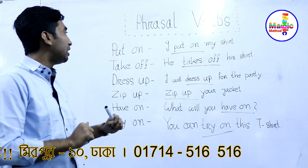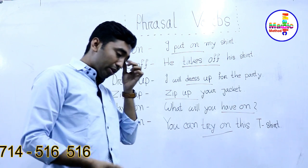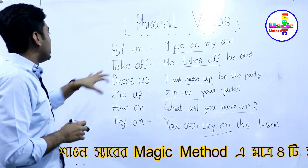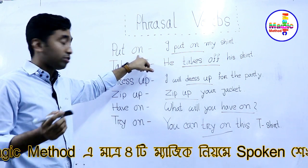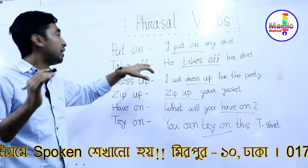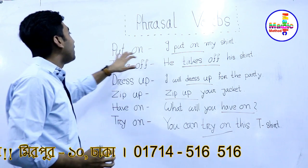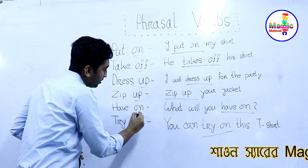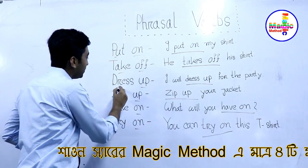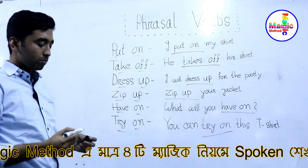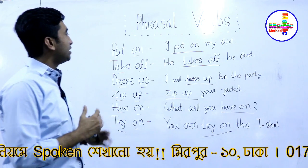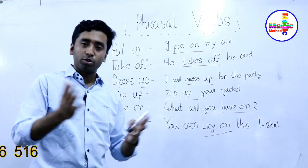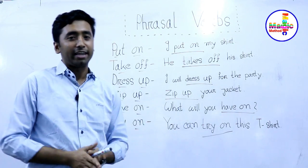So all these phrasal verbs related to clothes and dress are very essential in our daily life. Before concluding, a phrasal verb is actually a verb and a preposition together. All the words we saw — on, off, up — are prepositions, and the others are verbs. Usually students dislike phrasal verbs because there are so many in English. One request: please ignore my shortcomings, and thanks for watching.